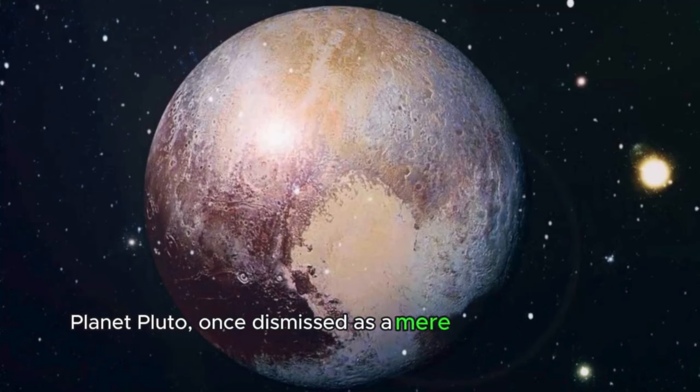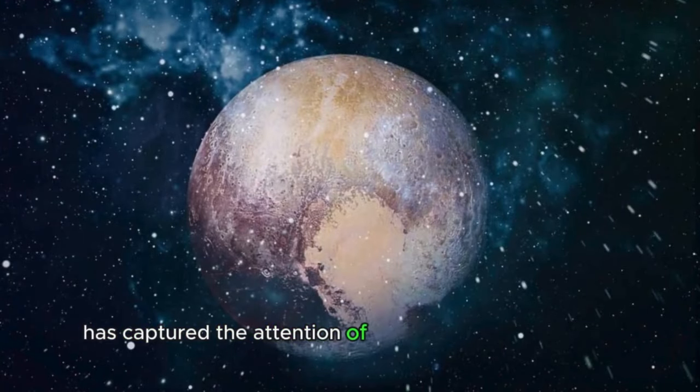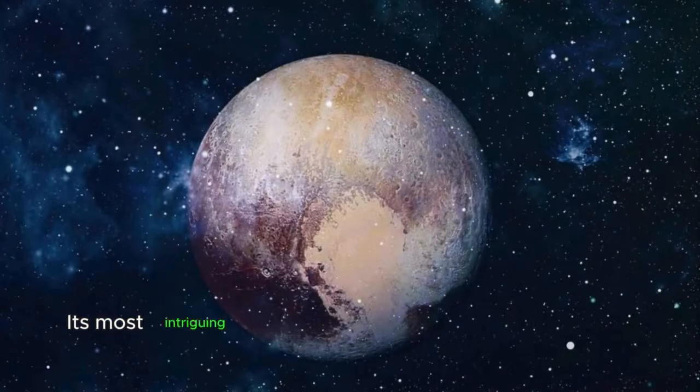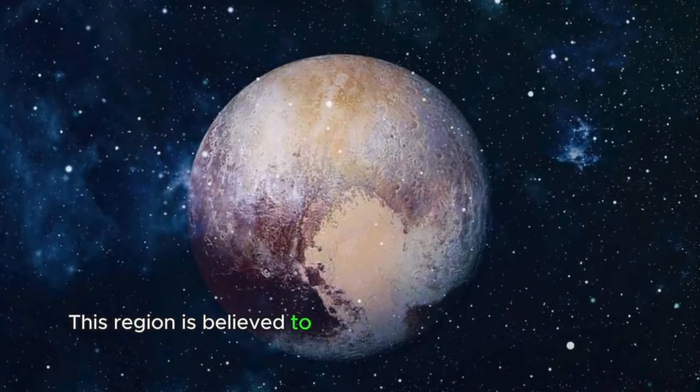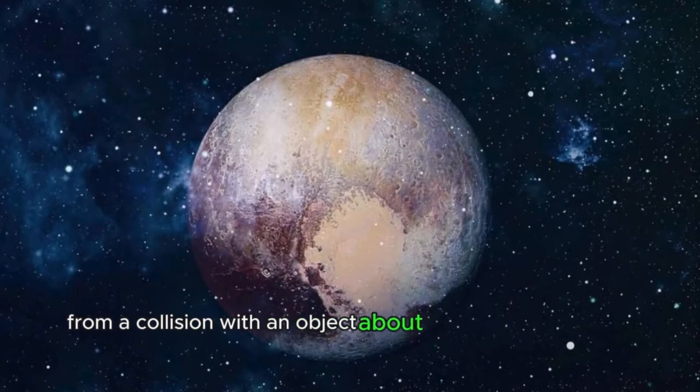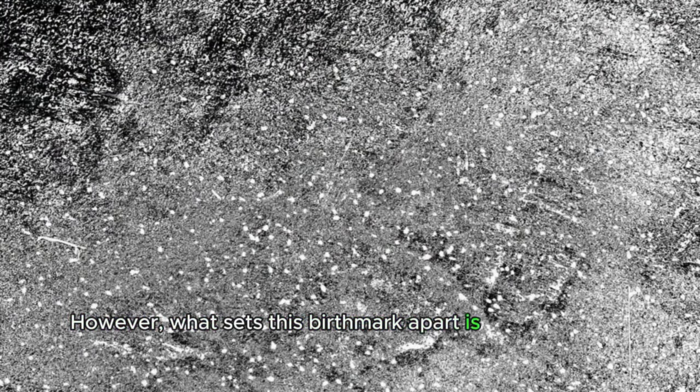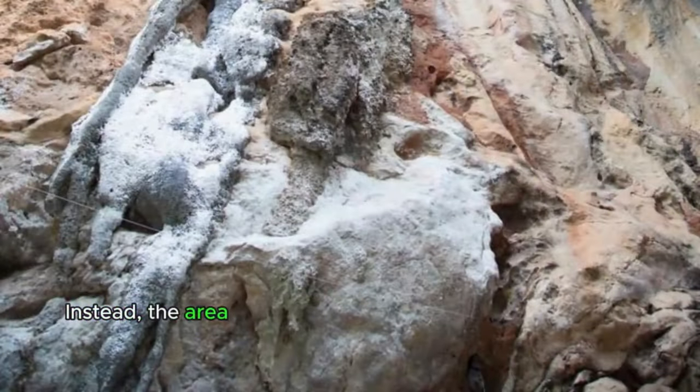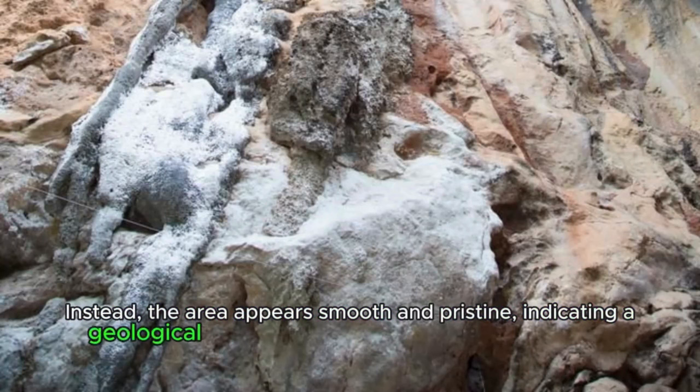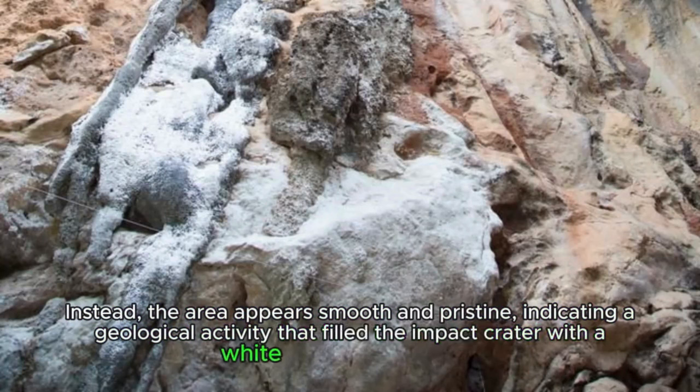This white area at the center of the planet. Pluto, once dismissed as a mere frozen rock in the outer reaches of our solar system, has captured the attention of scientists in recent years. Its most intriguing feature, nicknamed the heart of Pluto, pulsates with life. This region is believed to have formed relatively recently, in cosmic terms, from a collision with an object about 125 miles in diameter a few dozen million years ago. However, what sets this birthmark apart is its remarkable lack of craters, unlike the rest of Pluto's surface. Instead, the area appears smooth and pristine, indicating geological activity that filled the impact crater with the white substance nitrogen.